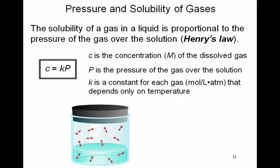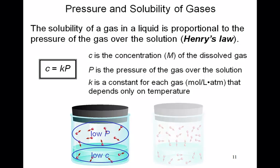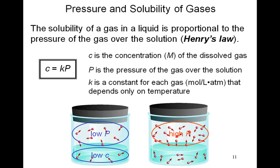So here we see we have a gas above its liquid, or actually above a liquid. The pressure is low, so the concentration is low. We have the same gas where the pressure above is very high, and therefore the concentration of the gas in the solution is also going to be high.